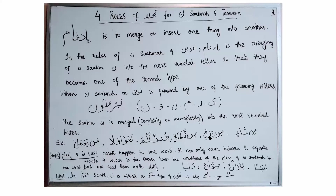In the next example, Noon Sakina is merged into letter Ra, and when reciting it you will not hear letter Noon at all: Mir-rizqin. In the following example, Noon Sakina is followed by letter Noon — also one of the Yermalun letters — so we merge letter Noon, hold the Gunna for some time, and recite: Min-no-tu-fa-tin.